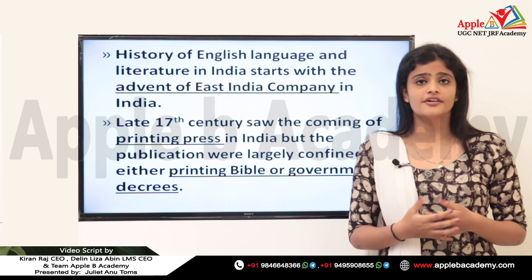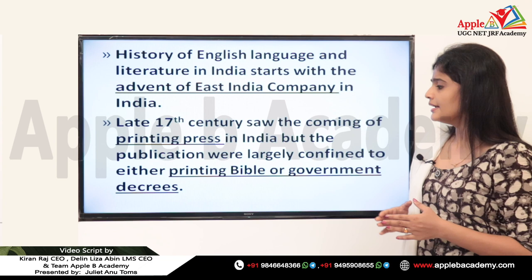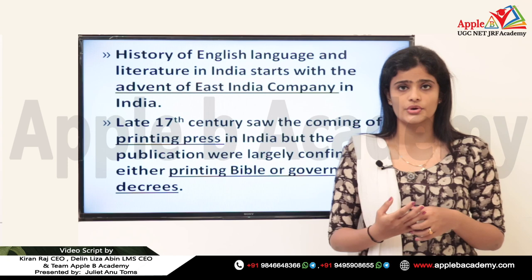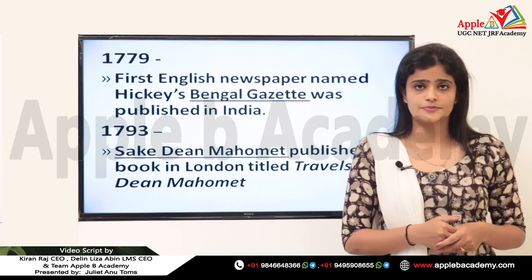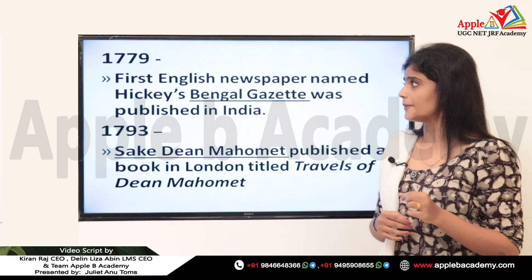In the late 17th century came the printing press, and with its arrival many newspapers and journals came into prominence. However, publications were largely confined to printing the Bible or government decrees. Two key events shaped the role of English in India: in 1779, the first English newspaper was published, named the Bengal Gazette.